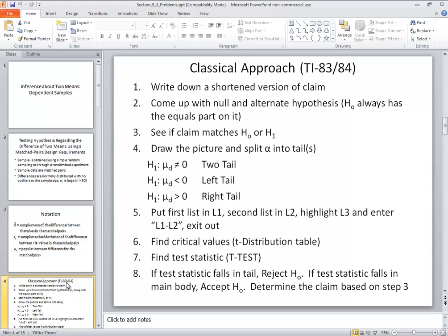Now this is the classical approach. We write down a shortened version of the claim, come up with a null and alternate hypothesis. H naught always has equals part on it. See if your claim matches H naught or H1. Draw the picture and split alpha into the tails. And here we're going to have mu sub D is not equal to zero, mu sub D is less than zero, or mu sub D is greater than zero. And then that will detail what kind of tail you have. Two tails, left tail, right tail. Put your first list in L1, second list in L2. You highlight L3 and enter L1 minus L2. Then find the critical values using the T distribution table. Find test statistic using the T test. And if your test statistic falls on tail, reject H naught. If your test statistic falls on the main body, accept H naught. And then determine the claim based on step 3.